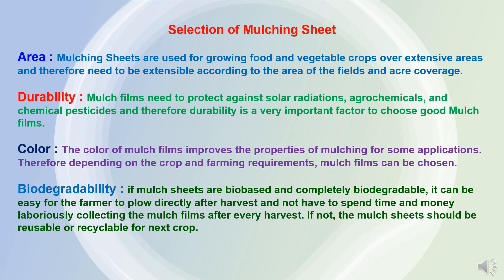Now, selection of mulching sheets. It depends on various factors like area where it is used, durability, color, and biodegradability. As the area factor is concerned, mulching sheets are used for growing food and vegetable crops over extensive areas and therefore need to be extensible according to the area of the field and acres of coverage. As durability is concerned, mulch films need to protect against solar radiation, agrochemicals, and chemical pesticides, so durability plays an important role in choosing good mulch films. The color of the mulch films improves the properties of mulching for some applications. Depending on the crop and farming requirements, mulch films can be chosen and the color varies from black, silver, or transparent.